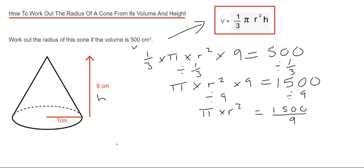So the next thing we're going to do then is divide by pi. This will give us r squared equals, so I'm going to type this on my calculator then. It's 1500 divided by 9 and then divided by pi.